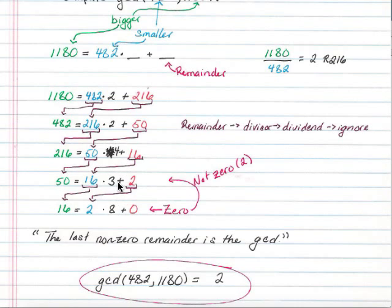So we do the same thing over and over again until we get down to 0 here. We see that we end up with 16 equals 2 times 8 plus 0, the remainder is 0.